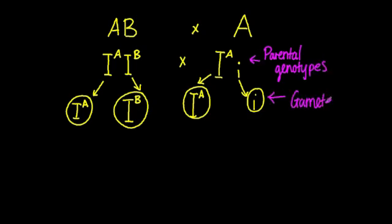So the next thing you would do is put these gametes into a Punnett grid, or otherwise known as a Punnett square, in order to look at the possible genotypes of the offspring.